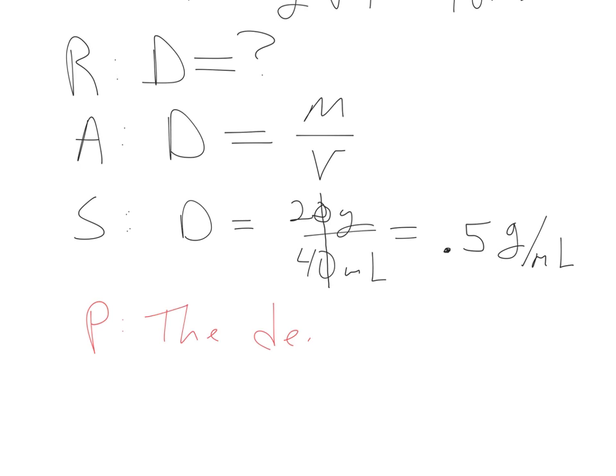Say the density of the object is 0.5 grams per milliliter.